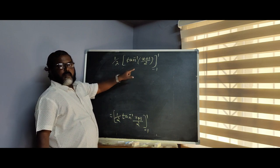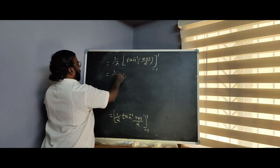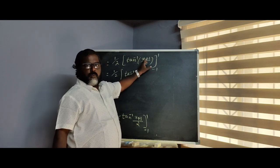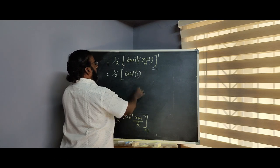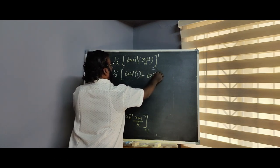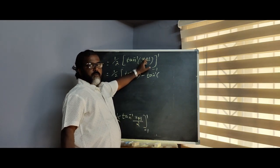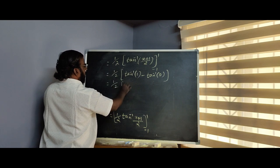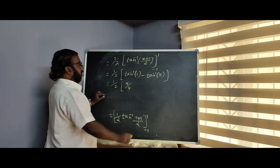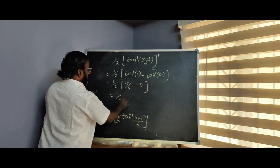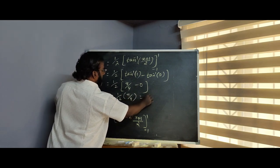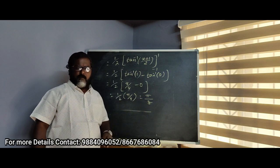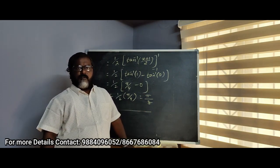Substituting limits — upper limit minus lower limit. At x equals 1: 1 by 2 times tan inverse of (1 plus 1) by 2 equals 1 by 2 times tan inverse 1 equals 1 by 2 times pi by 4. At x equals minus 1: tan inverse 0 equals 0. So the answer is 1 by 2 times pi by 4 equals pi by 8. The answer is pi by 8. Thank you for watching; for more videos, subscribe to this channel.